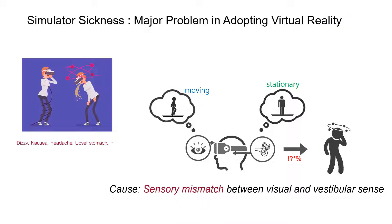VR sickness is a major problem in people adopting VR and using it for an extended period of time. It is caused by the sensory mismatch between the visual and vestibular sense. That is, while the human visual system thinks the environment is apparently moving, the user is actually stationary as detected by the vestibular sense. The conflicting signals between the two cause various sickness symptoms, such as nausea, disorientation, and headaches.